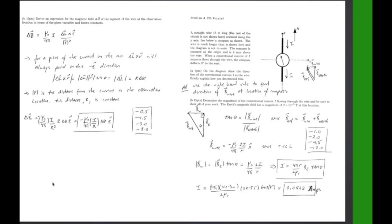For part B it says determine the magnitude of the conventional current I flowing through the wire and be sure to show all your work. This is a straightforward problem using a lot of the formula sheet for B wire, for B tangent and also knowing that B net is equal to B wire plus B earth.